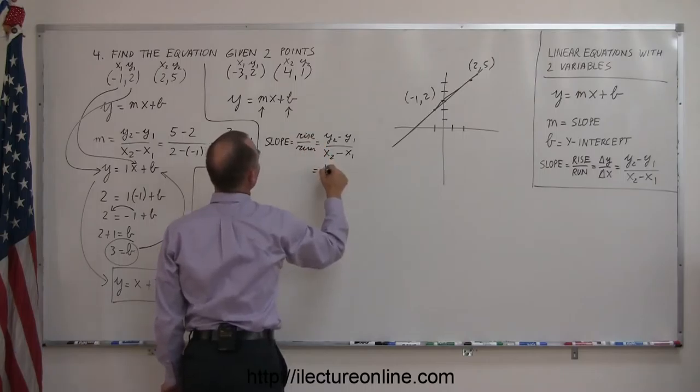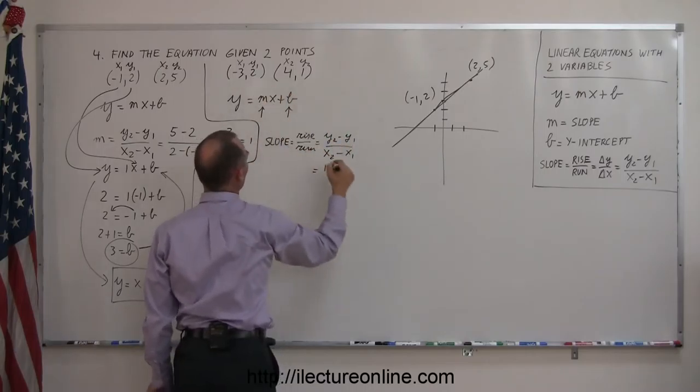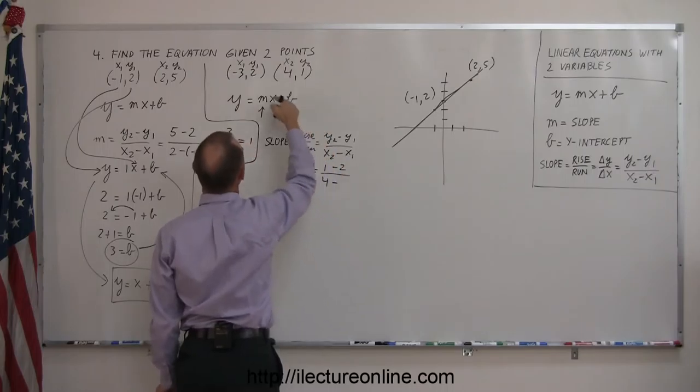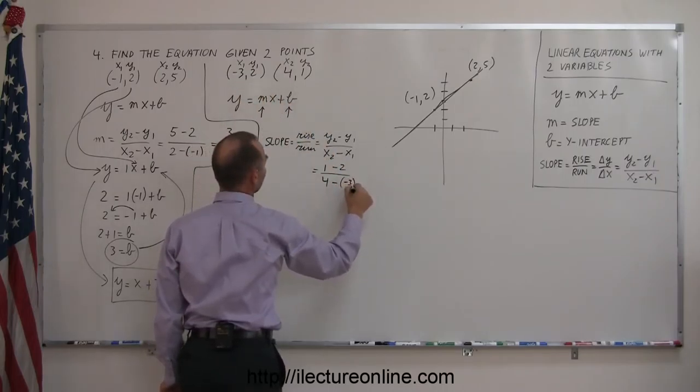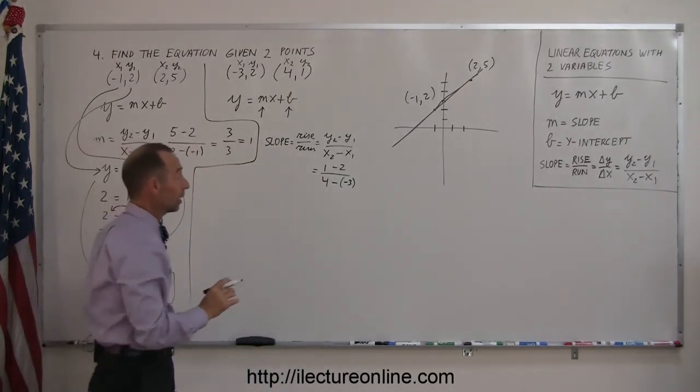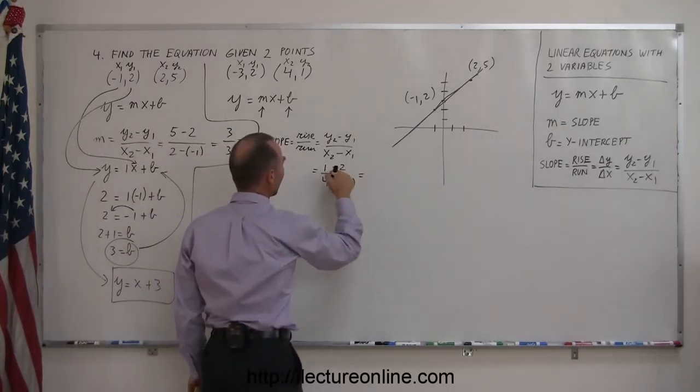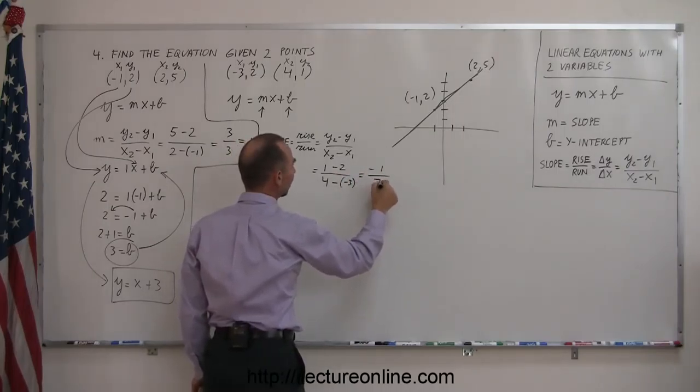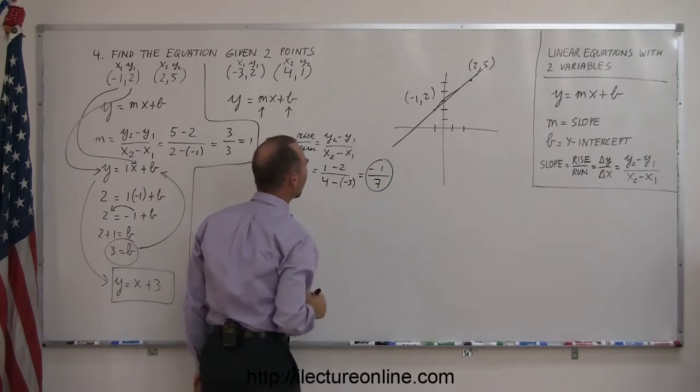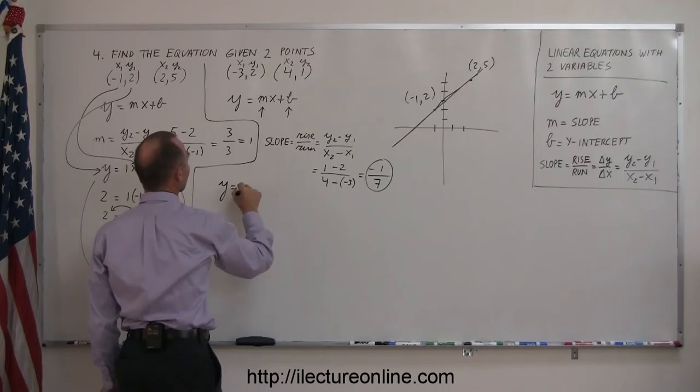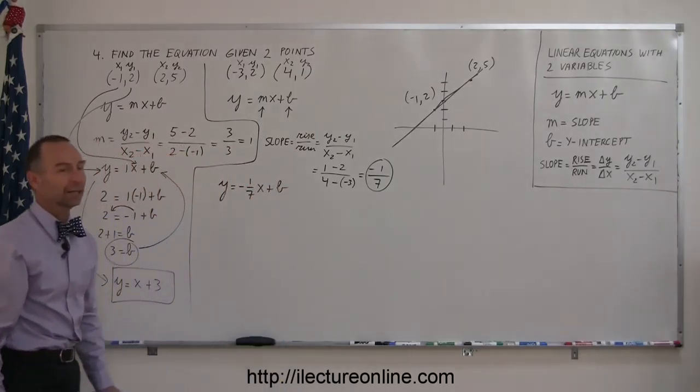y2 is 1 minus y1, which is 2, divided by x2, which is 4, minus x1, which is minus 3. Use parentheses when you subtract negative numbers. 1 minus 2 is negative 1, 4 minus a minus 3 is like 4 plus 3, or 7, so my slope is negative 1 over 7. Plug that into the equation: y equals negative 1 over 7x plus b. We're halfway there.